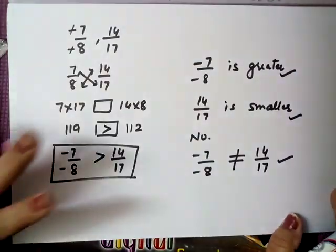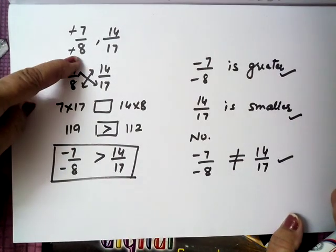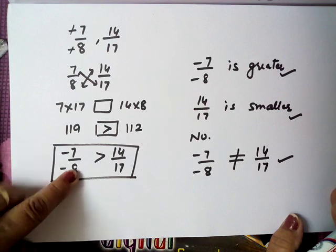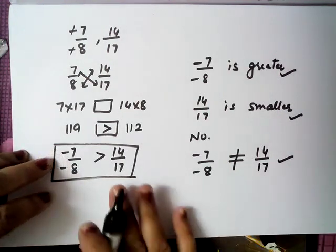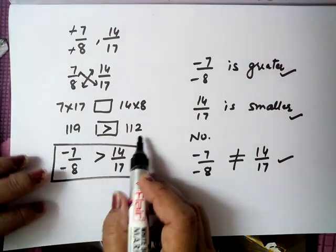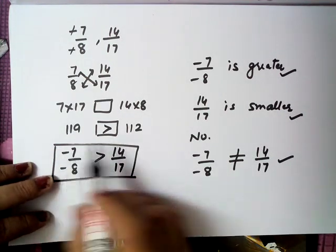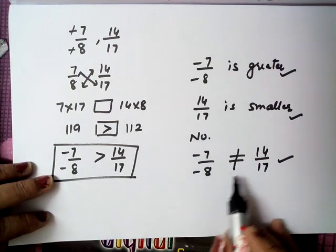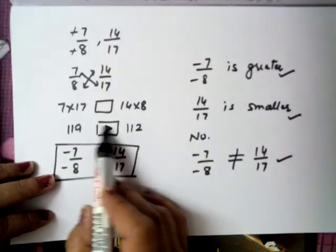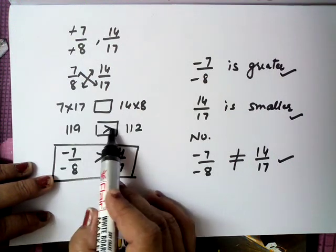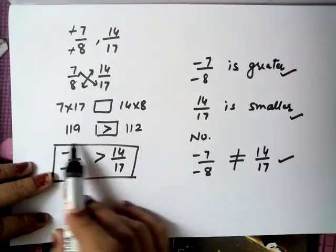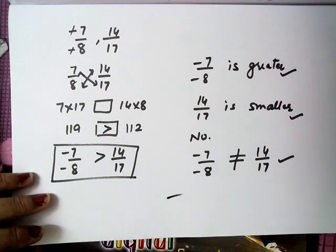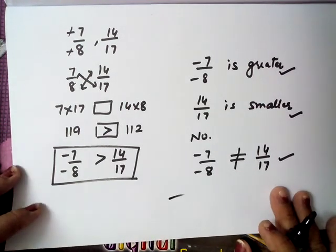Sabke liye ek hi style hai. First of all aapko standard form banana hai. Then standard form ke baad cross multiplication karni hai. Cross multiplication ke baad aapko uska comparison karna hai. Aur comparison ke baad ek hi style se aap greater, smaller, or not equal to or equal to find out kar sakte ho. If both are same, toh hum equal to ka sign daal denge — toh na vo greater hoga, na vo less hoga, vo sirf equal to rah jayega.